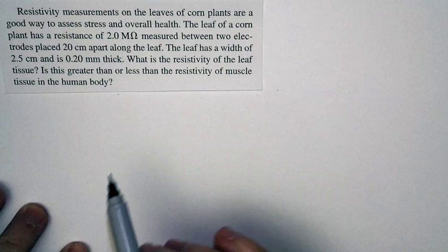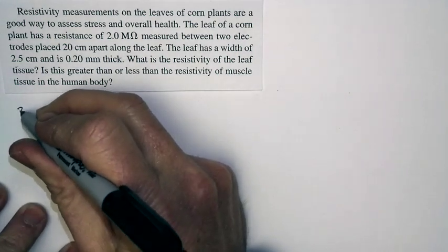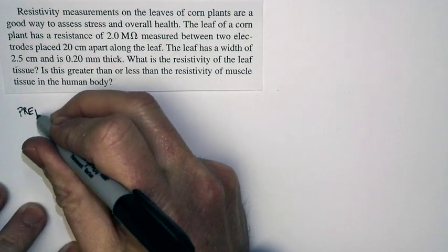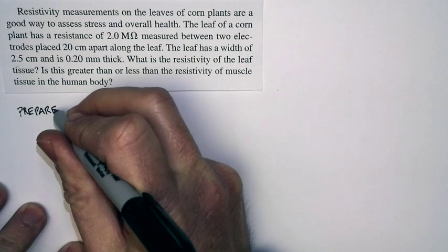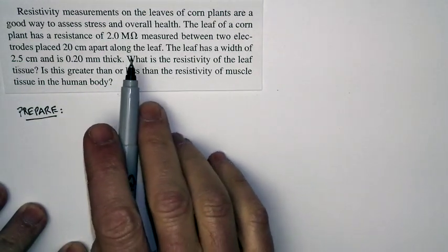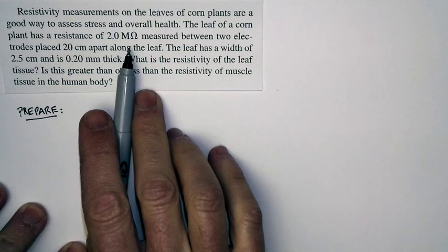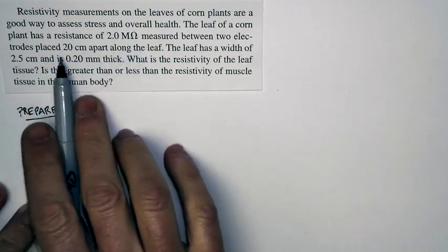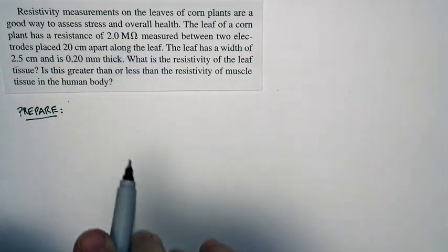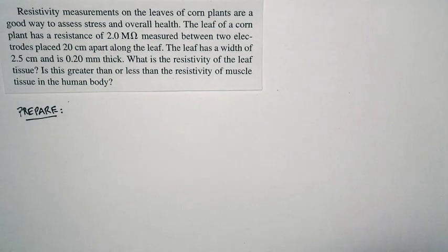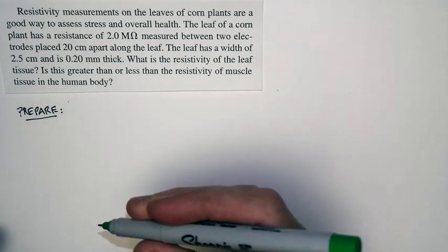Let's take a look at what the problem's asking. So let's do our preparation here. What the question sets out is this: You've measured the resistivity of a corn plant by measuring the dimensions of a leaf and measuring the resistance between two points. And let's go ahead and sketch out a picture and see what this looks like.